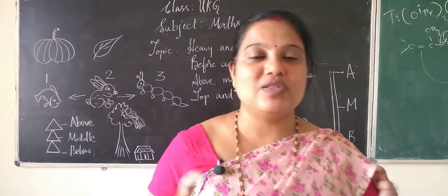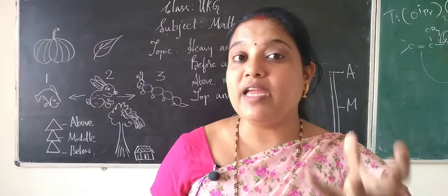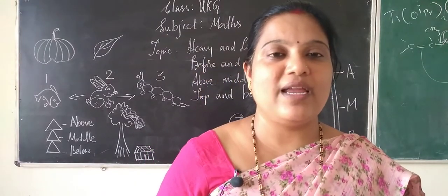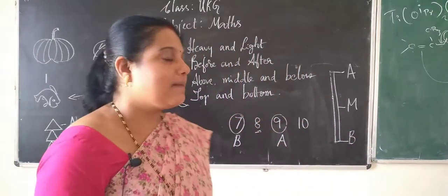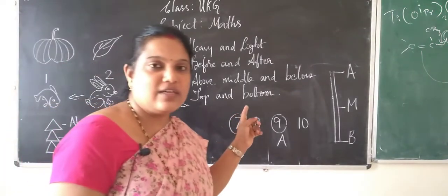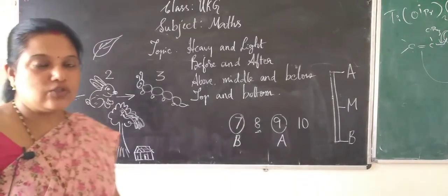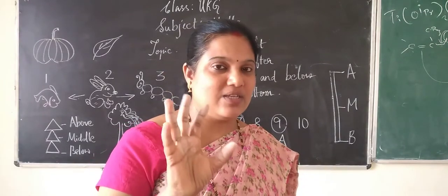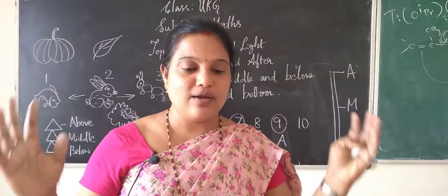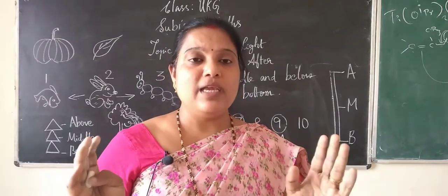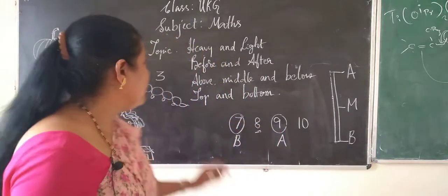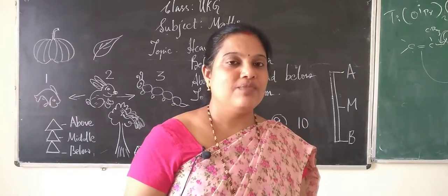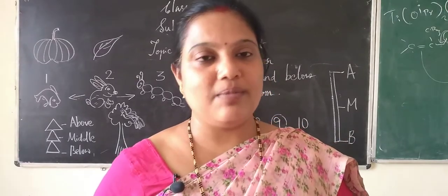We normally differentiate heavy and light objects based on their weight. I have drawn some pictures for you. See here — this is a pumpkin. It's very heavy and difficult to hold in one hand. You need to use both hands to lift it. And see the leaf — the leaf is very light; you can hold it very easily. That's how you differentiate between heavy and light.